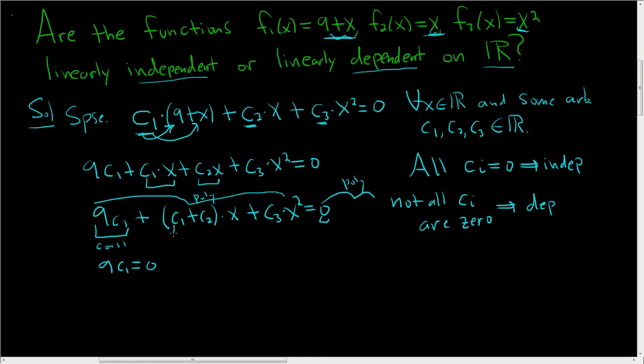Now let's look at the coefficient of x, c sub 1 plus c sub 2. And we set it equal to the coefficient of x on the right hand side. Here it is, plus 0x. So this is equal to 0.